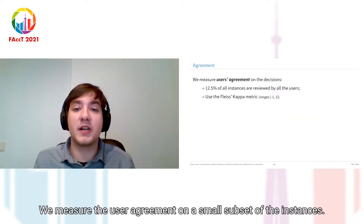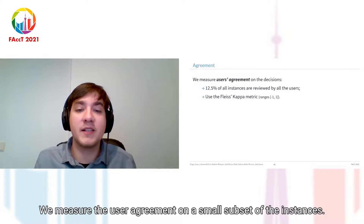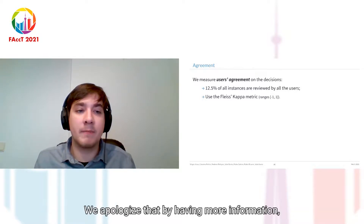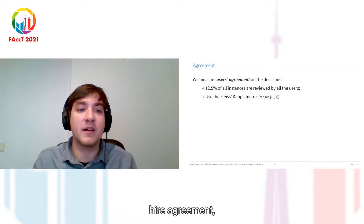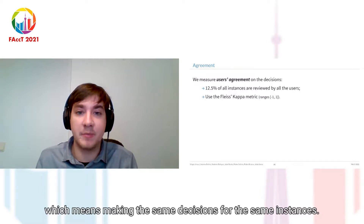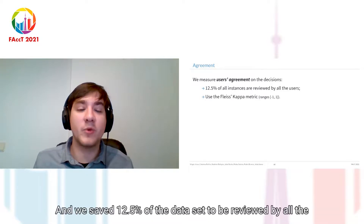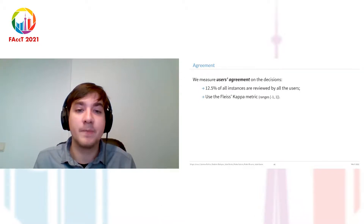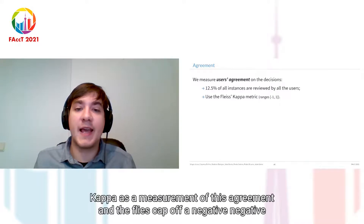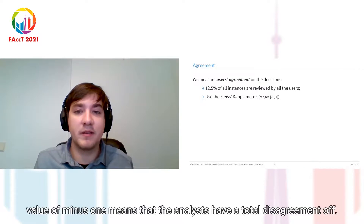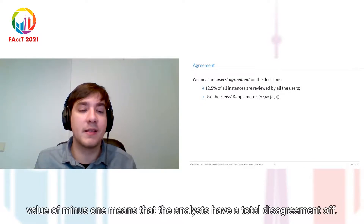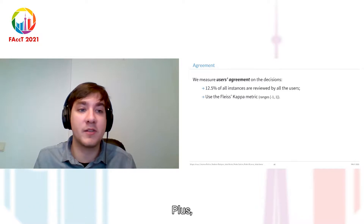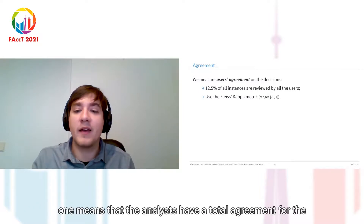We also measured user agreement on a small subset of instances. We hypothesized that with more information, users would have higher agreement — meaning they would make the same decisions for the same instances. We saved 12.5% of the dataset to be reviewed by all analysts. We used Fleiss' Kappa as a measurement of agreement, where a value of minus one means total disagreement and plus one means total agreement.